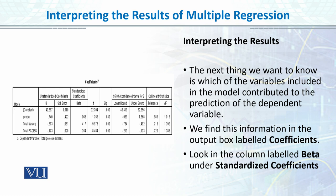The third and very important table is the coefficients table. In multiple regression, the coefficients table gives the unique contribution of each independent variable or predictor. Looking at the standardized beta coefficients, gender has a value of 0.063 and is not a significant predictor because its p-value is greater than 0.05.